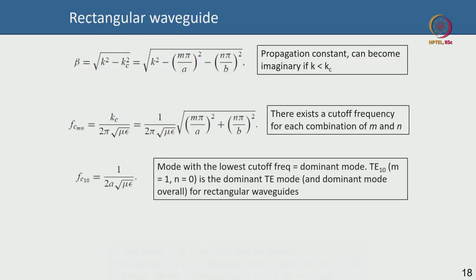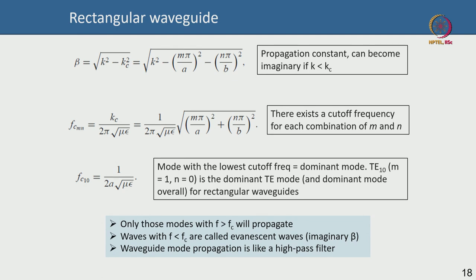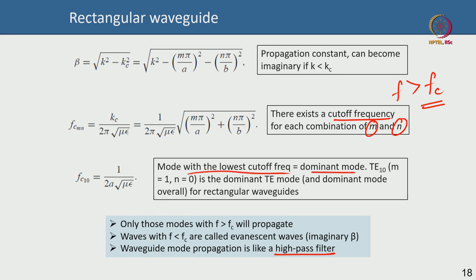For each combination of m and n there is a certain cutoff frequency. This cutoff frequency behaves like a high-pass filter — only those modes whose frequency is larger than the cutoff frequency will propagate; the rest will not. The mode with the lowest cutoff frequency is called the dominant mode.